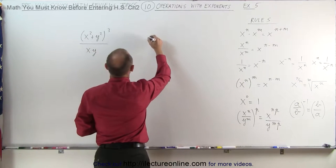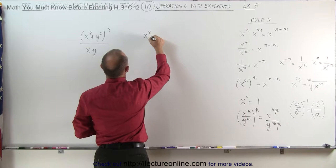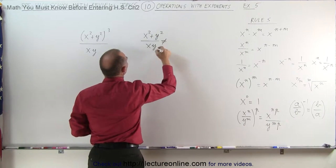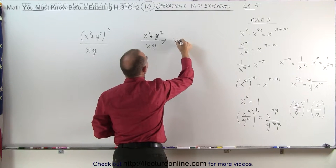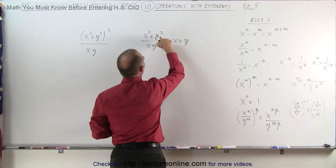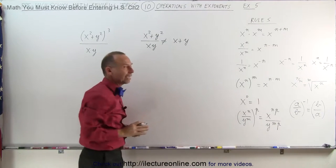Even if it was written like this. If we had x squared plus y squared divided by x times y, this is not equal to x plus y. When you divide x into x squared you get x, and y into y squared you get y. That is not the case.